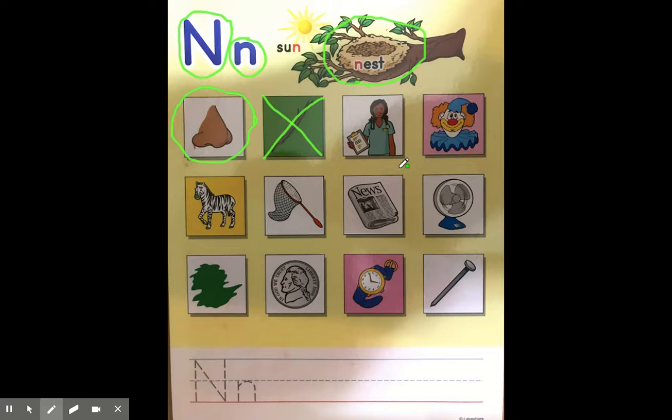It's a nurse. Nurse, nose, nest. That's right. That has the same beginning sound as nose and nest. The nurse is getting circled. Clown. Clown? No. Clown does not have the same beginning sound like nest and nose and nurse. So that gets an X.